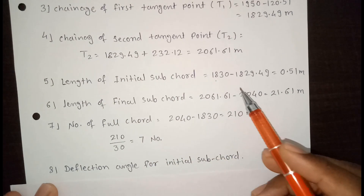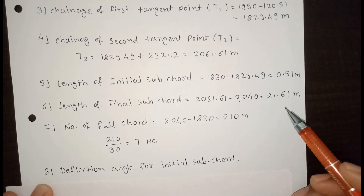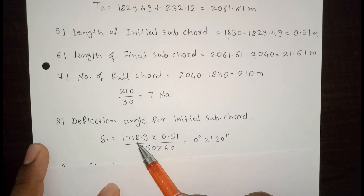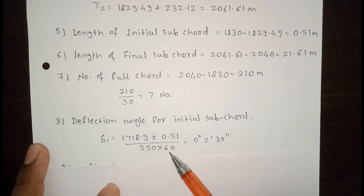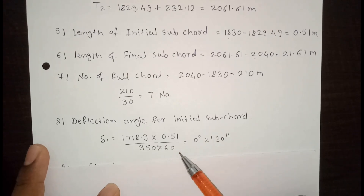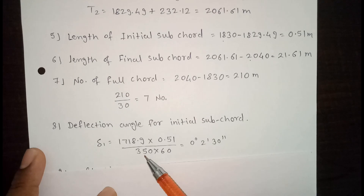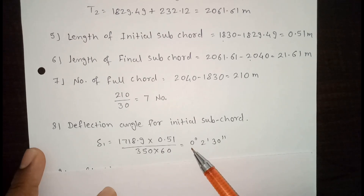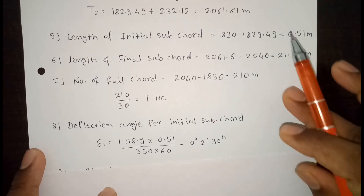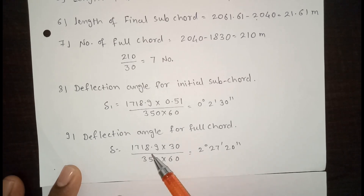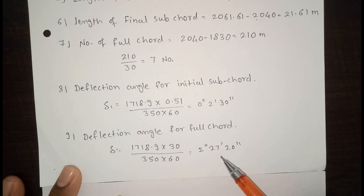Summary so far: initial sub-chord length is 0.51 meters, final sub-chord length is 21.61 meters, and number of full chords is 7. For the deflection angle of the initial sub-chord, the formula is 1718.9 × chord / radius, all multiplied by 60. With initial sub-chord 0.51 and radius 350, the initial deflection angle is 0 degrees 2 minutes 30 seconds. For the full chord of 30 meters with radius 350, the deflection angle for the full chord is 2 degrees 27 minutes 20 seconds.